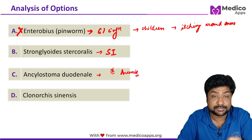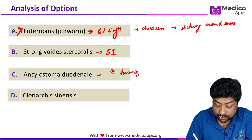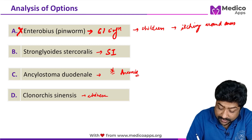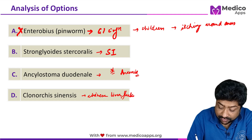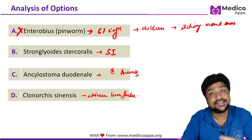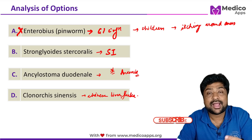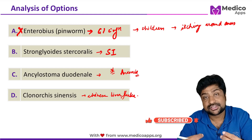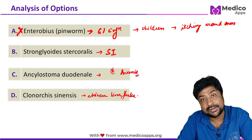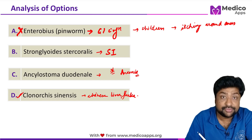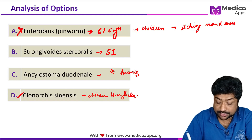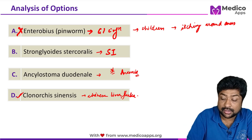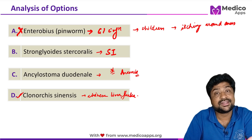The last option is Clonorchis sinensis, also called the Chinese liver fluke. This can affect and cause inflammation, stricture formation, and dilatation of the biliary apparatus. So this option actually fits with our diagnosis. Let's look at the most important points about Clonorchis sinensis so you can answer if they are asked in an exam.